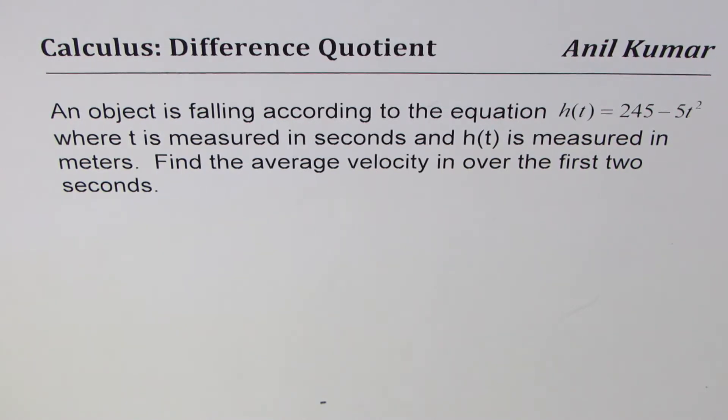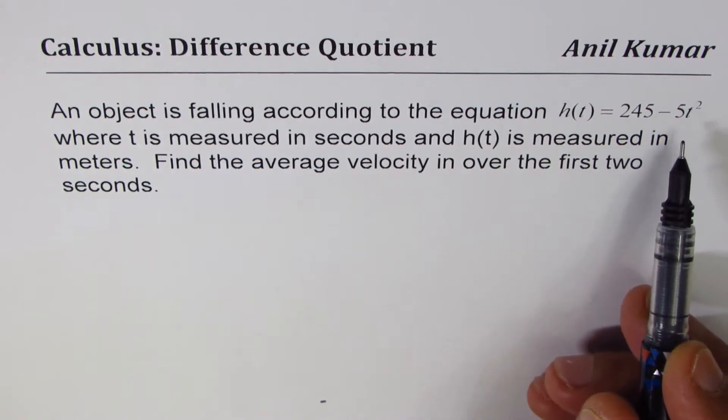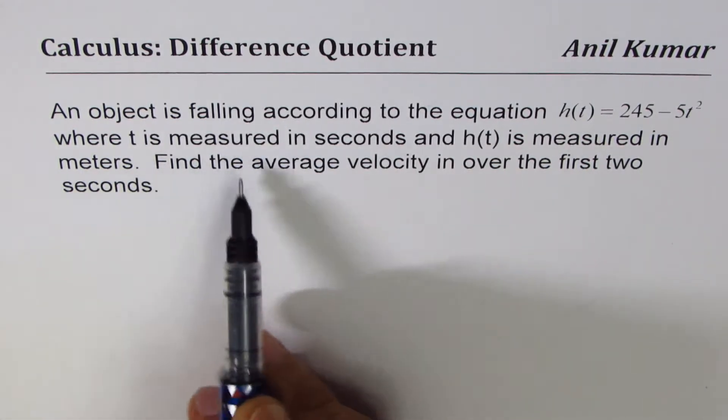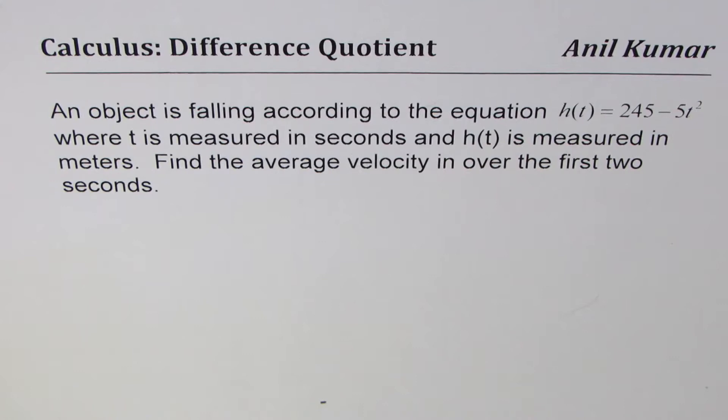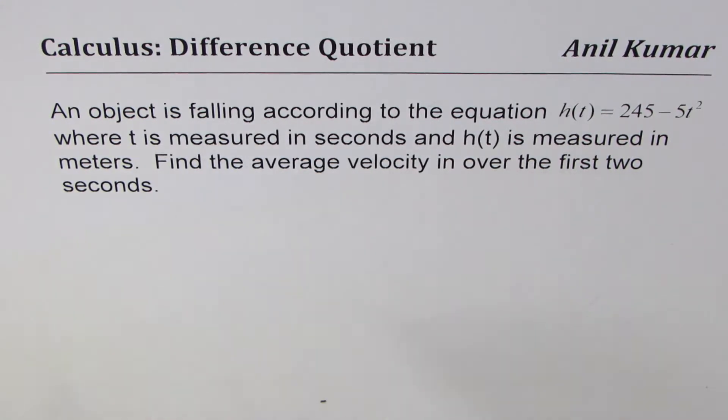The question here is: an object is falling according to the equation h(t) = 245 - 5t², where t is measured in seconds and h(t) is measured in meters. Find the average velocity over the first 2 seconds.